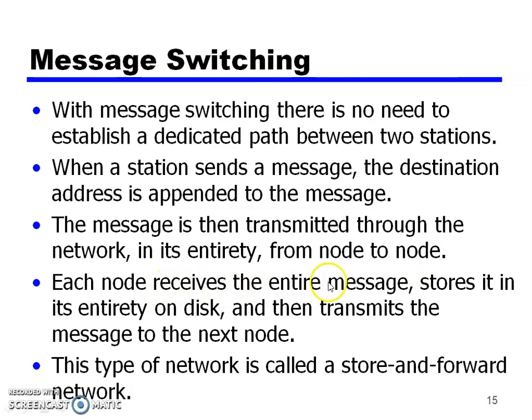Each node receives the entire message, stores it entirely, and then transmits the message to the next node. Message switching uses a store and forward mechanism. Suppose one device sends to another — it passes through a number of switching nodes, and then it reaches the receiver.